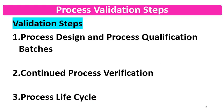The validation has three main steps. First is Process Design and Process Qualification of the batches. Second is Continued Process Verification. Third is the Process Life Cycle. Once the process is finalized in R&D and ready for the manufacturing plant or scale-up activities, Process Design and Qualification begin at the actual manufacturing site — that is Stage 1. Stage 2 is Continued Process Verification, and Stage 3 is the Process Life Cycle.